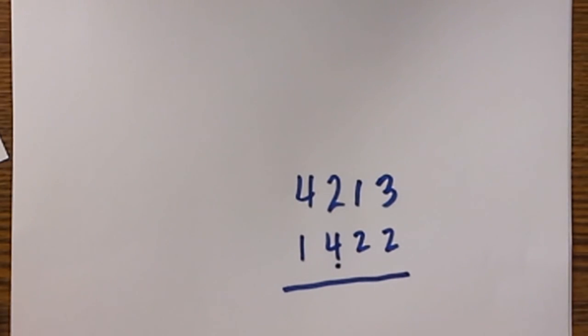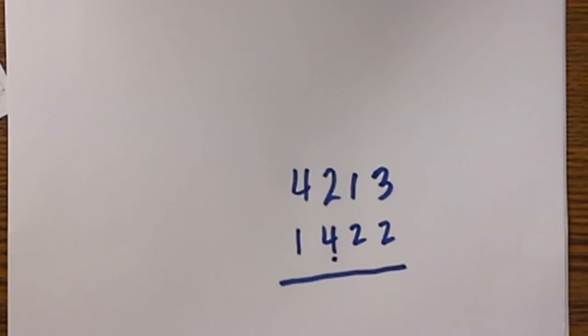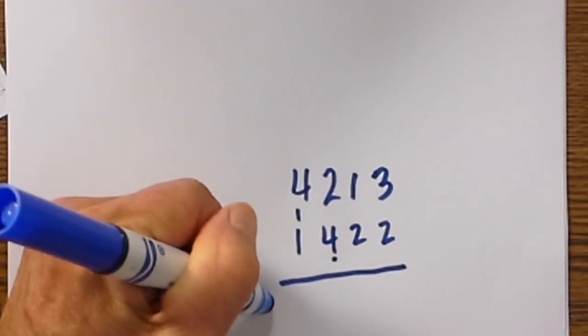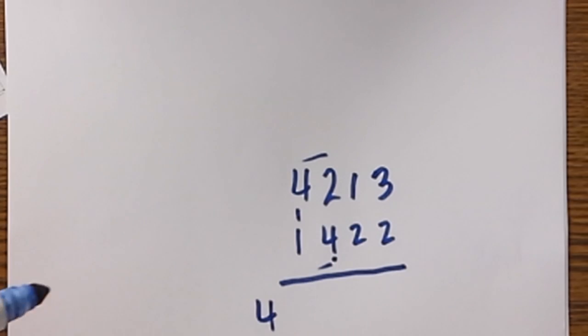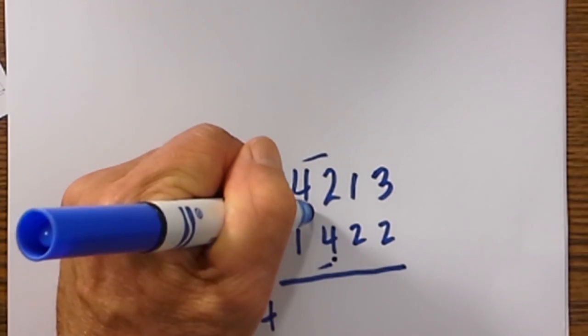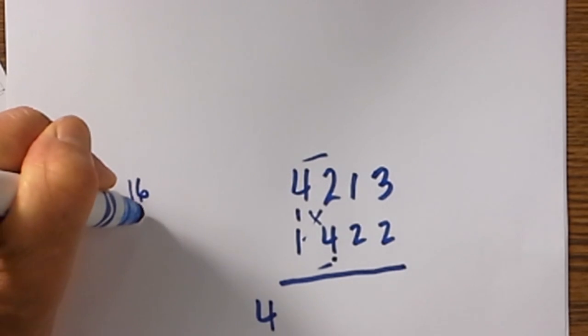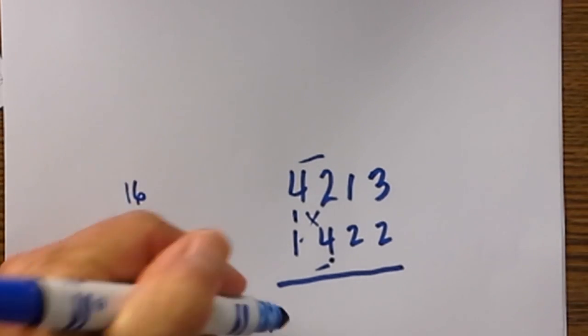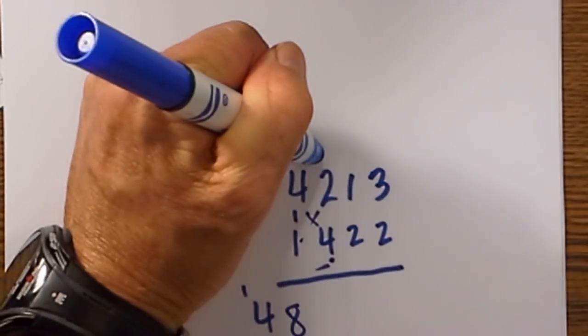So let's do one final example. Here we go: we have 4,213 times 1,422. I start at the left. I have a vertical: 4 times 1 is 4. I then move to the next 2 digits. I have a cross: 4 times 4 is 16, 2 times 1 is 2, that gives me 18, carry the one digit to the left. I then move to my next box.